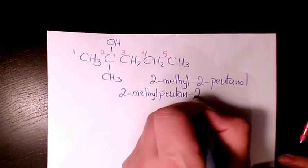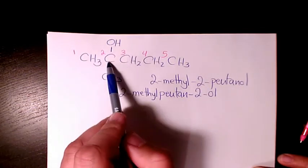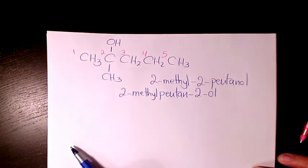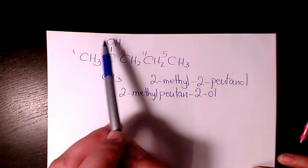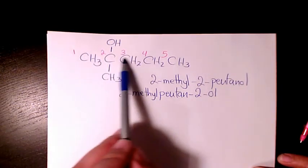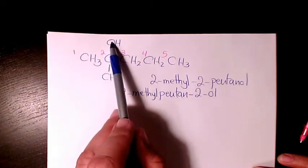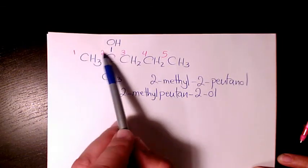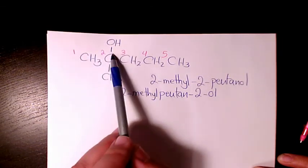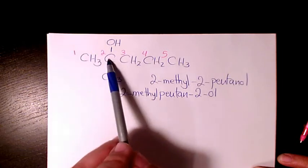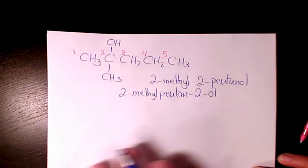Because the alcohol group is on the second one, so both of them are correct. And as you see here, this carbon is a tertiary carbon. Why? Because this alcohol OH group is connected to the carbon, and this carbon connects to three carbon atoms. So we are dealing with a tertiary alcohol in this case.